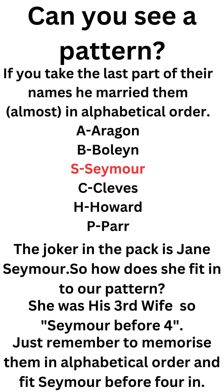Can you see a pattern? If you take the last part of their names, he married them almost in alphabetical order. A: Aragon. B: Boleyn. C: Cleves. H: Howard. P: Parr.